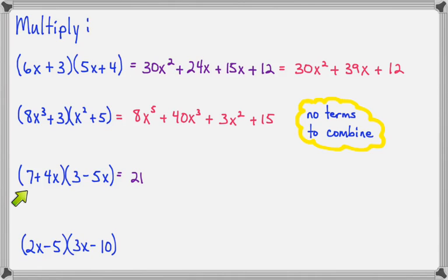Outer times outer is 7 times negative 5X, which is minus 35X. Inner times inner is 4X times 3, which is 12X. And last times last is 4X times minus 5X, which is minus 20X squared.